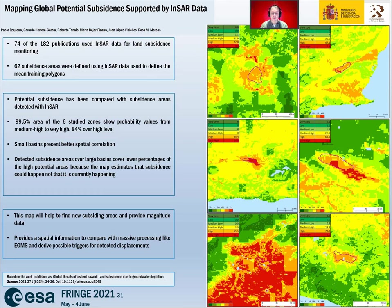84% are high or very high levels. In these areas, it is also seen that small basins, usually surrounded by ranges, are very well defined and present high spatial correlation.